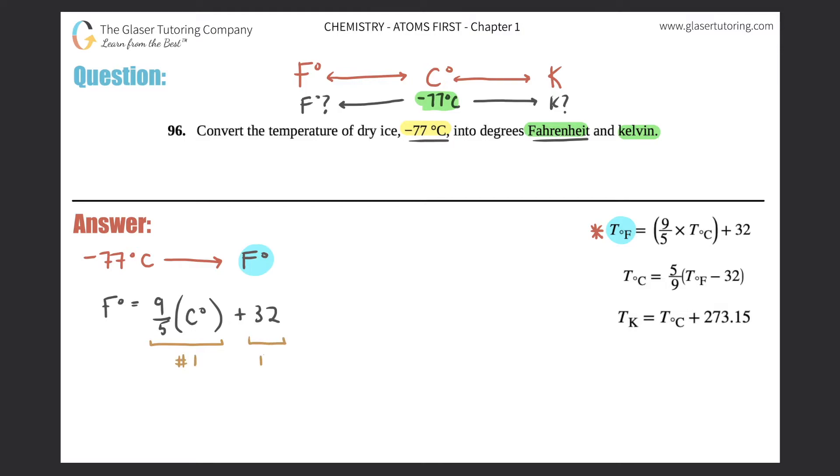And then addition and subtraction comes later, so you will do the multiplication first and then your addition. So Fahrenheit equals 9/5 times the Celsius, which was negative 77, plus 32. And we got to use our sig figs along the way. So Fahrenheit equals 9 divided by 5 times 77.